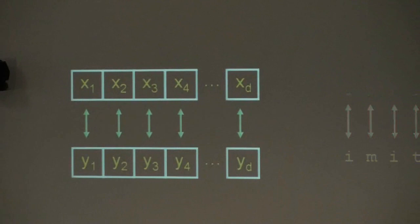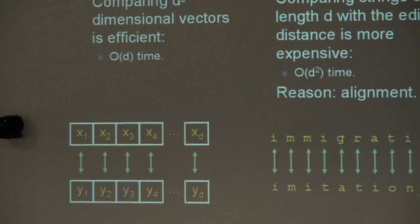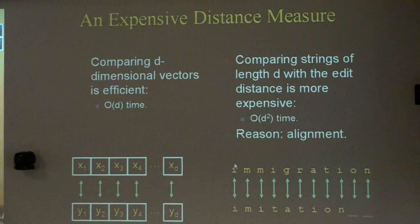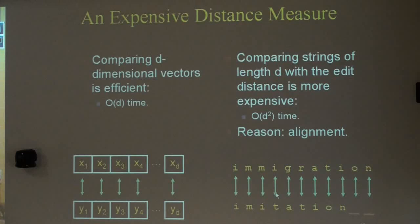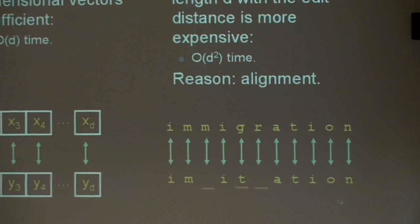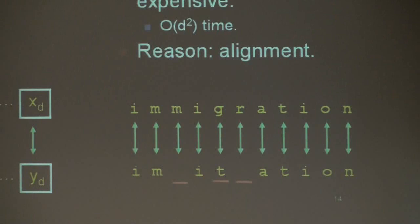Here's an example of a computationally expensive distance measure. To compare two strings, you cannot simply compare the first letter to the first, the second to the second, and so on — that wouldn't be very meaningful. To have a meaningful estimate of distance, you need to find an optimal alignment that tells you what parts of one string correspond to parts of the other. This is what the edit distance does, and because it must search for an optimal alignment, it is super-linear in time — specifically, quadratic in the length of the strings.